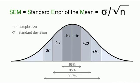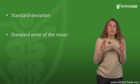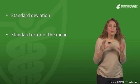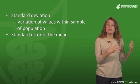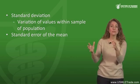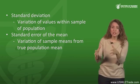One thing to recognize is that there is a difference between the standard deviation and the standard error of the mean — they sound a lot alike, so don't confuse them. The standard deviation describes the variation of values within one sample of the population. The standard error of the mean describes the variation of sample means from that of the true population mean. Both are used to calculate the confidence interval.